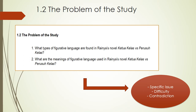Your topic may be interesting and you may have lots to say about it, but this isn't a strong enough basis for academic research. Without a well-defined research problem, you are likely to end up with an unfocused and unmanageable project. You might end up repeating what others have already said, trying to say too much, or doing research without a clear purpose. You need a problem in order to do research that contributes new and relevant insights — whether you are planning your thesis, starting a research paper, or writing a research proposal.